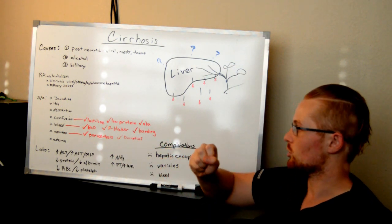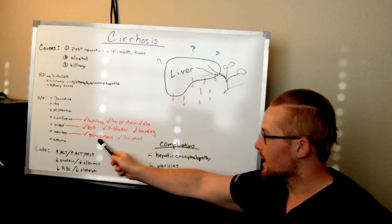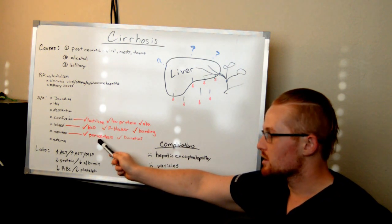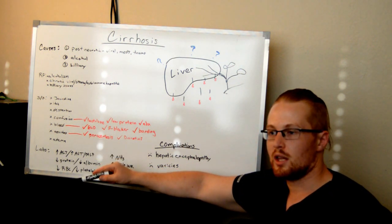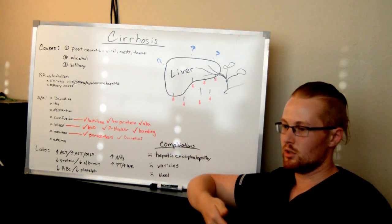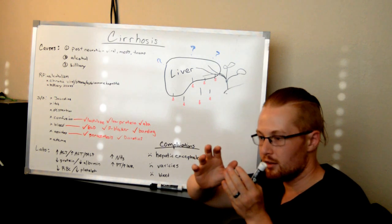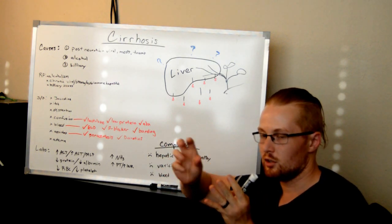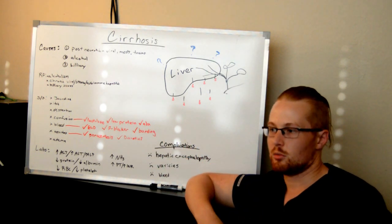For the ascites, they may need to do a paracentesis, which is where they will go in with a needle into the abdomen to that barrier where there's all the fluid, and they'll suck all that fluid off because it's putting extra pressure on all the organs and the lungs.